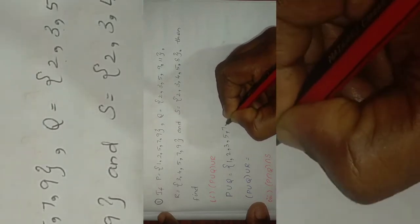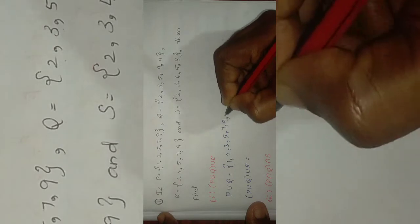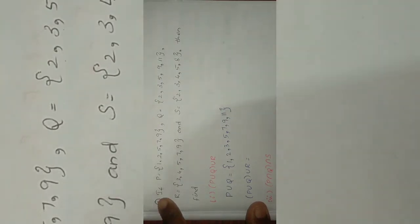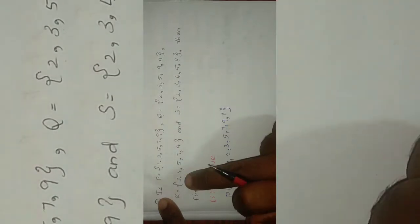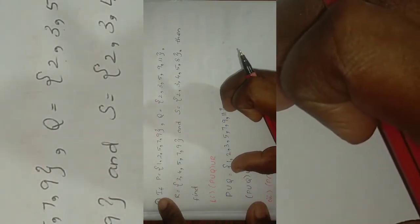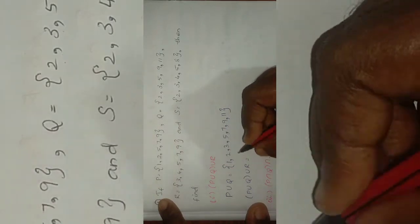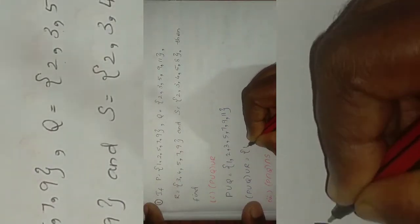P union Q union R equals the set {1, 2, 3, 5, 7, 9, 11}. All elements are listed here. If P union Q is computed, and then union R is applied, same elements result. P union R gives us the combined elements.